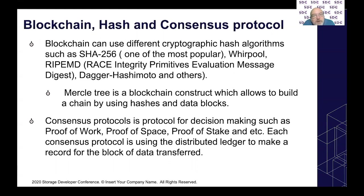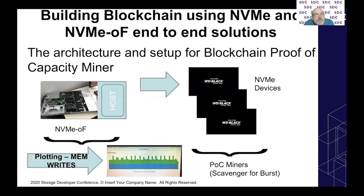Consensus protocols are protocols for decision making, such as proof of work, proof of space, proof of stake, etc. Each consensus protocol uses a distributed ledger to make a record for the block transfer. Building a blockchain using NVMe and NVMe-oF end-to-end solutions is also discussed.